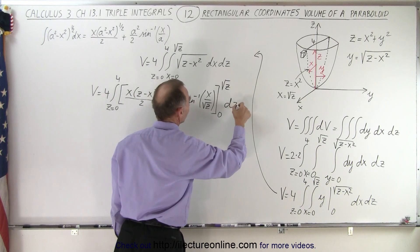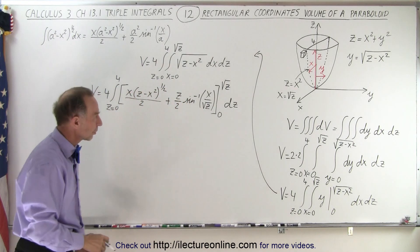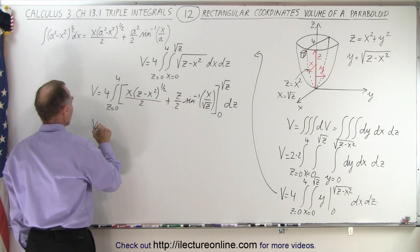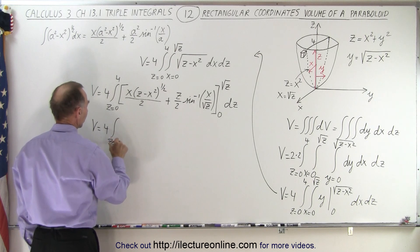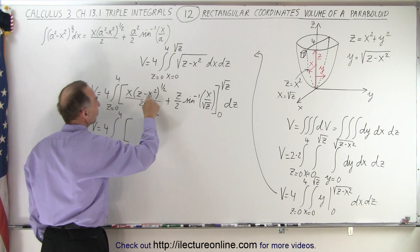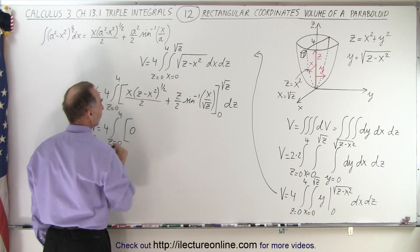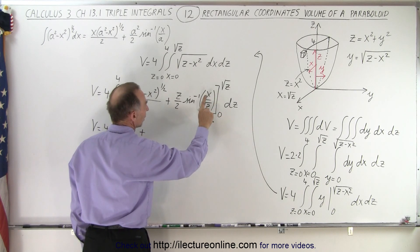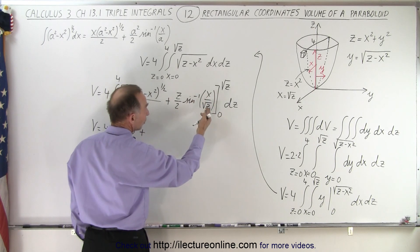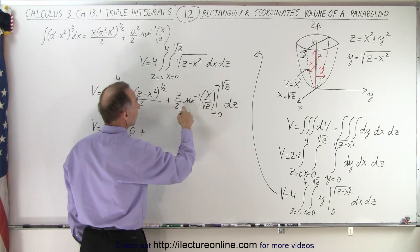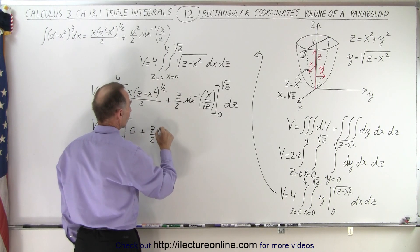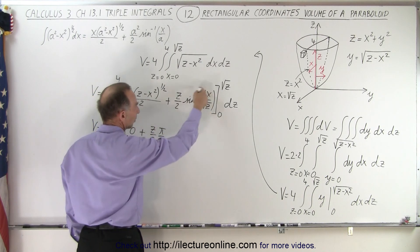We still have our dz because the last integral is going to be over the integral z. Now let's plug everything in. We have v is equal to 4 times the integral from z equals 0 to 4 of when we plug in the upper limit the square root of z, square root of z, z minus z is 0 so we get 0 for the first term, plus plug in the square root of z divided by the square root of z is 1, the inverse sine of 1 is 90 degrees or pi over 2, so here we have z divided by 2 times the pi divided by 2.